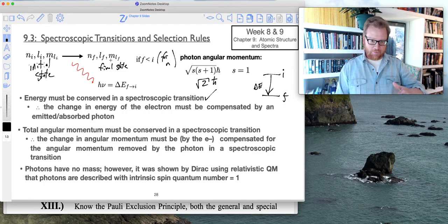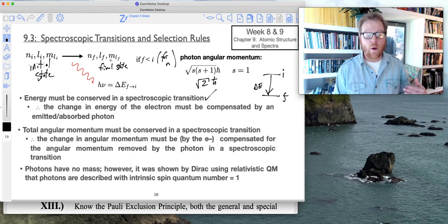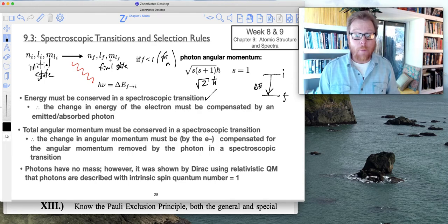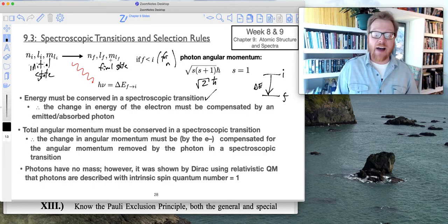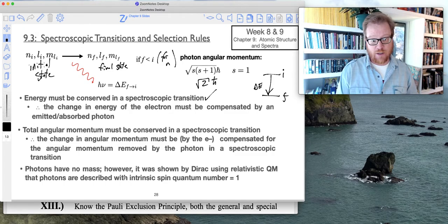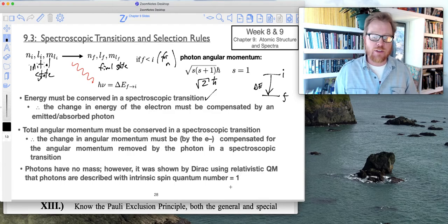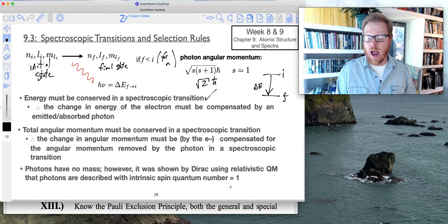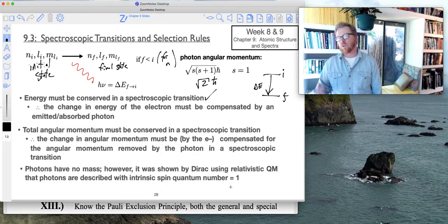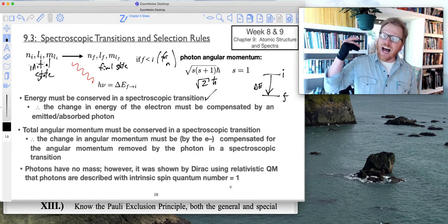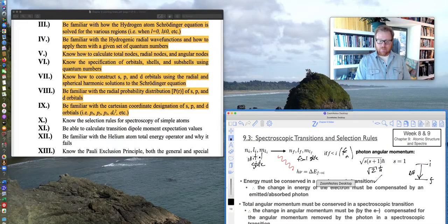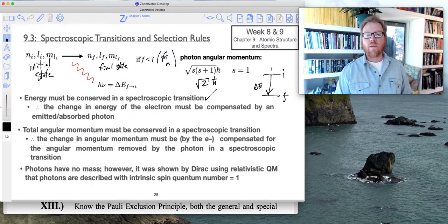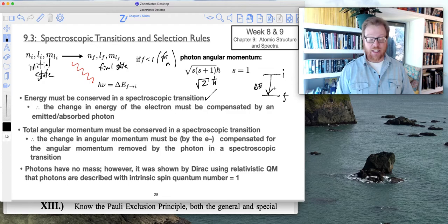But that photon is also going to be taking angular momentum along with it. Even though photons are massless, they do have angular momentum. Photons have no mass, however, as shown by Dirac using relativistic quantum mechanics, photons are described with an intrinsic spin quantum number equal to one, so s equals one. When a photon gets emitted, it's removing angular momentum from that atom, and what that means is when the electron goes through that transition, it has to compensate that loss of angular momentum.